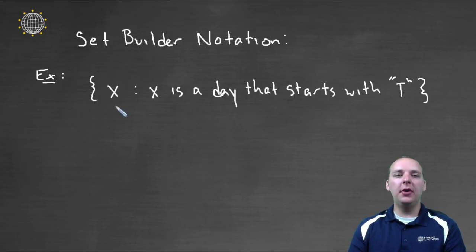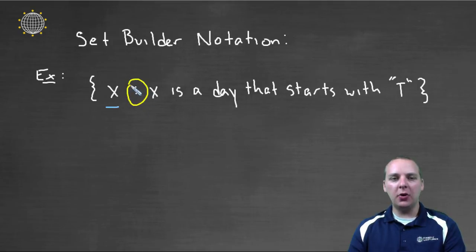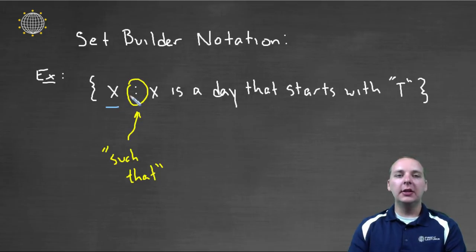You'll have usually some variable term, and then you'll have this colon, or sometimes you'll have a vertical line, and then you'll have some stuff written after the colon. So, this is the set of all X's, where X is a day of the week that starts with the letter T. So, what we have going on here, is this colon right here in English, means the words such that. And so you can just read that in English as such that. So, all the X's, such that X is a day of the week that starts with the letter T.